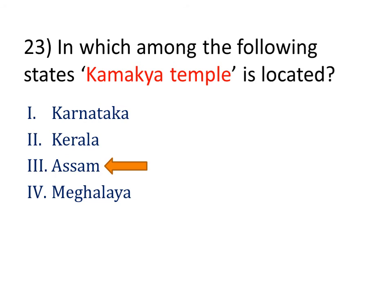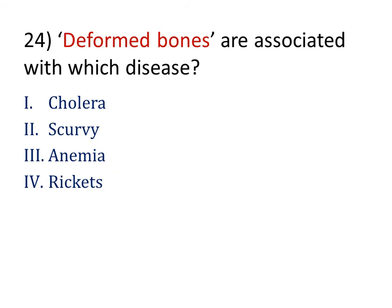Deformed bones are associated with which disease? Our answer is Rickets. Rickets is a disease of bone that interferes with the body's normal recycling process, in which new bone tissue gradually replaces old bone tissue. Over time, bones can become fragile and misshapen; the pelvis, skull, spine, and legs are most commonly affected.